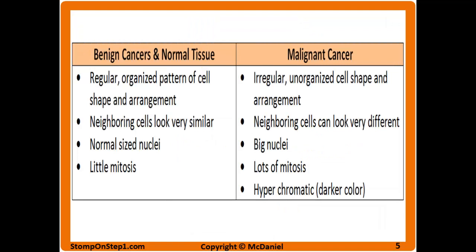Here's another table with more detail about the microscopic differences between the two. Benign cancers and normal tissue have a regular, organized pattern of cell shape and arrangement; neighboring cells tend to look very similar, with normal-sized nuclei and very little mitosis. Malignant cancers have an unorganized cell shape and arrangement — it just looks disorganized. Neighboring cells can look very different from each other due to different mutations. They tend to have bigger nuclei, lots of mitosis because they're dividing rapidly, and they tend to be hyperchromic — a darker color than normal tissue.